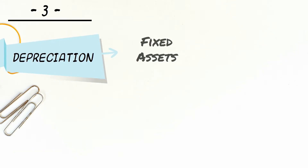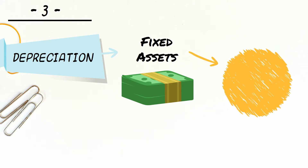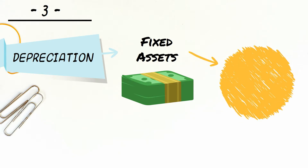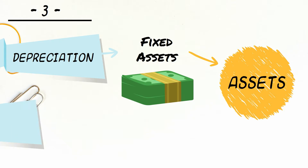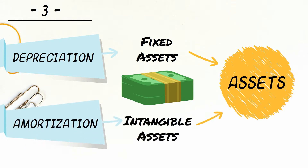Depreciation is the wear and tear on fixed assets, which is expensed off each year. Fixed assets are shown net of depreciation in the balance sheet. In the same way, amortization expense is incurred on intangible assets.